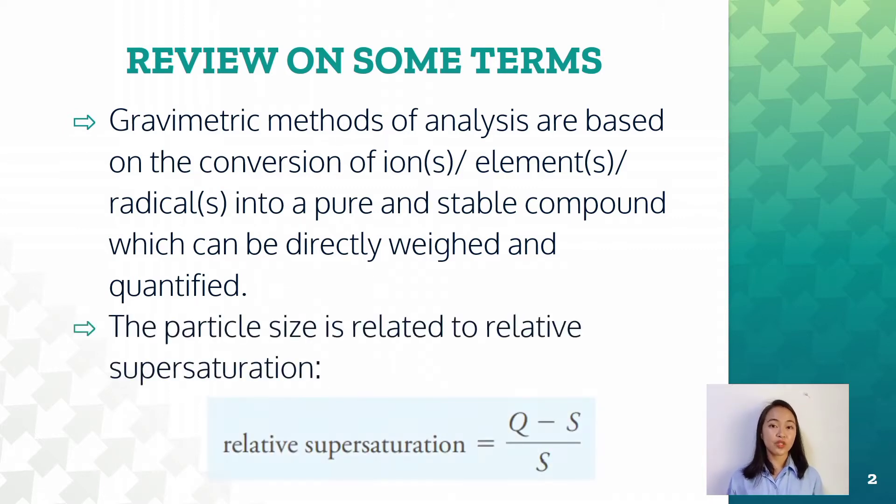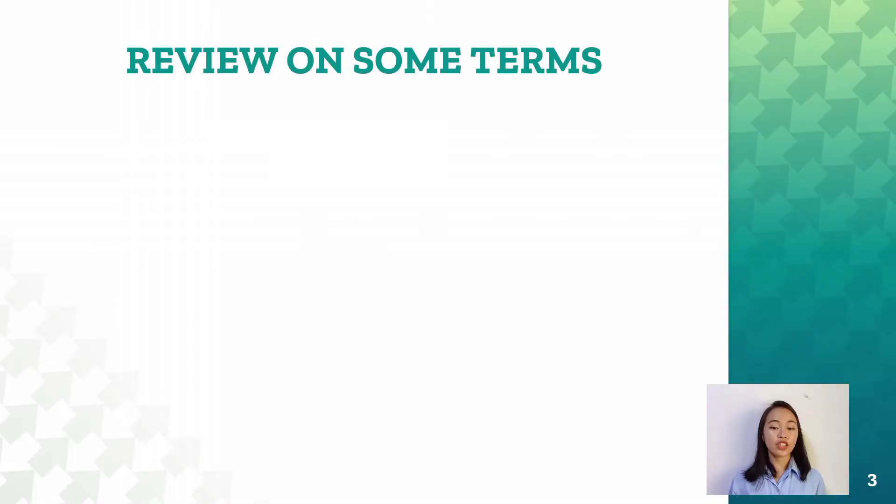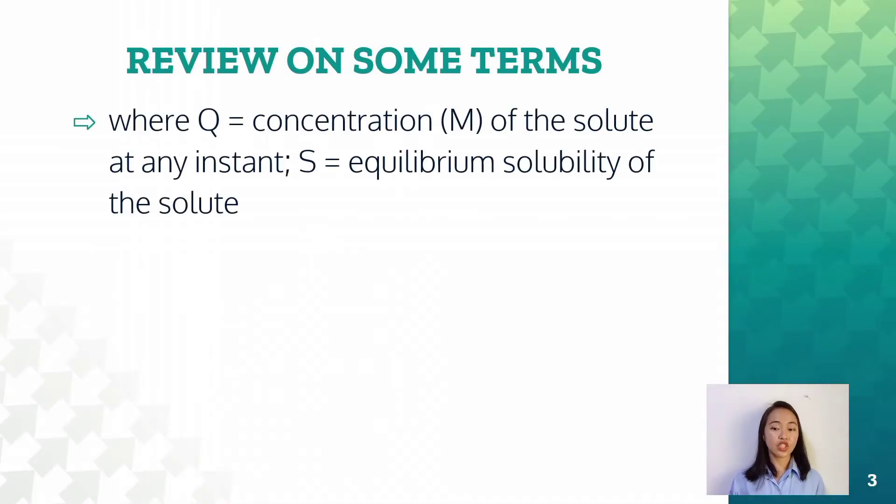Relative supersaturation equals Q minus S over S, where Q stands for the concentration M of the solute at any instant, and S is the equilibrium solubility of the solute.